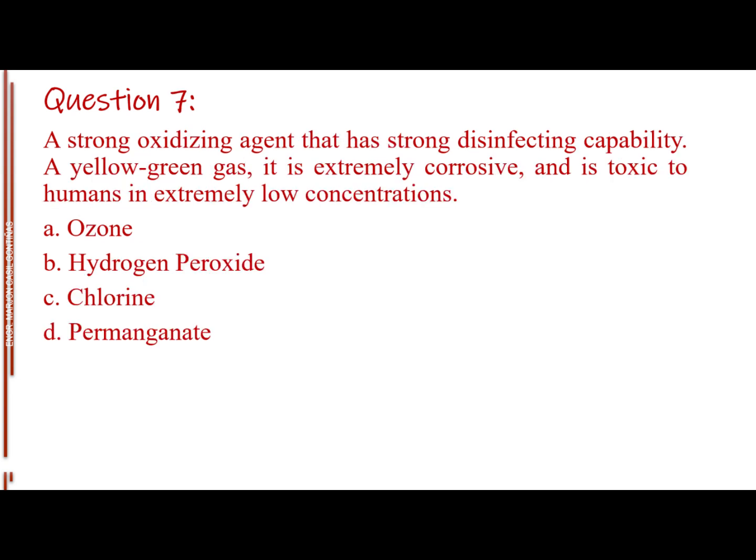Question number 7. A strong oxidizing agent that has strong disinfecting capability. A yellow-green gas, it is extremely corrosive, and is toxic to humans in extremely low concentrations. Letter A, Ozone. Letter B, Hydrogen peroxide. Letter C, Chlorine. Letter D, Permanganate. The answer is Letter C, Chlorine.